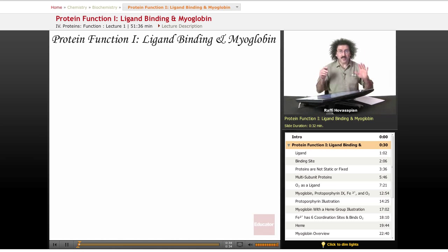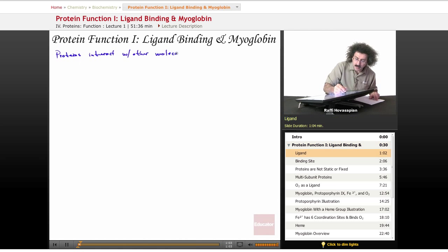So proteins, they interact with other molecules. Let's define something called a ligand. A lot of people pronounce it ligand, I prefer to pronounce it ligand. Any molecule that binds, here's the key word, reversibly.